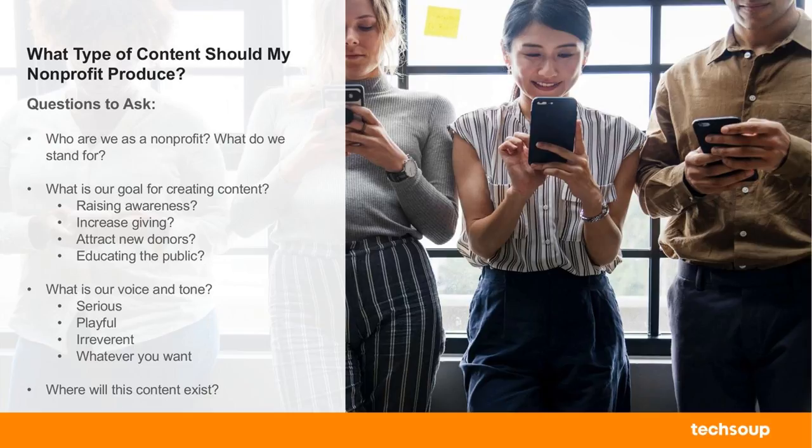Then you want to ask yourself: where will this content exist? There are some things that should be a blog, some things that should be a longer-form article, and some things that will just be a social post. Whenever you are creating content, you should always think about the end game of where it is going to exist. That also has to do with where it might end up — is it going to get picked up in a newsletter, or shared around the Internet? You always have to keep in mind not just what you are creating, but what it's going to look like where it ends up.